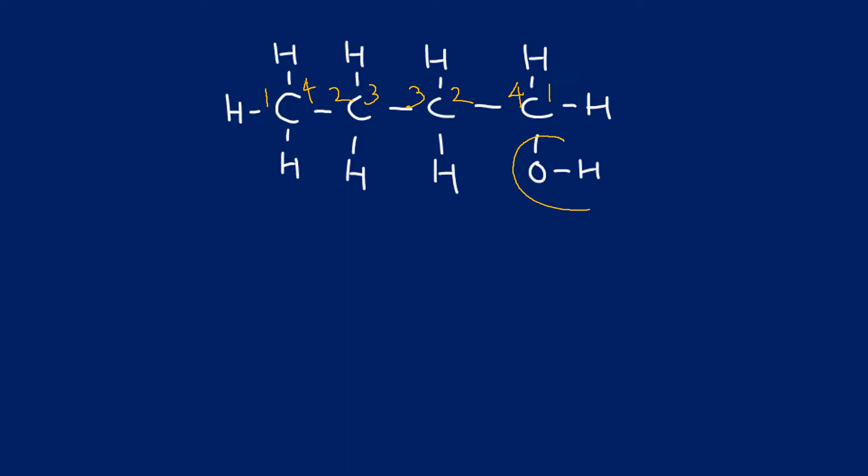Now the functional group here is an alcohol, so this is butanol. I need to identify the position of the alcohol, and it's either one or four. Must go with the lowest number, so this becomes butan-1-ol.